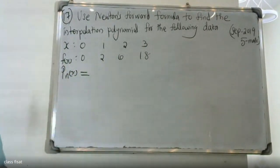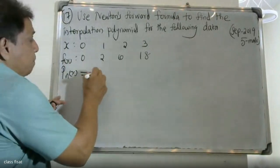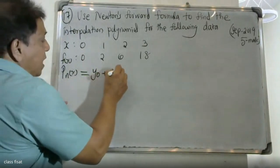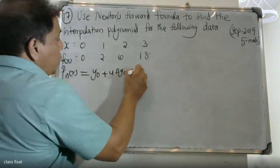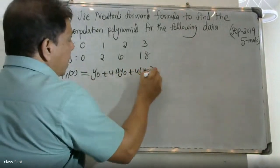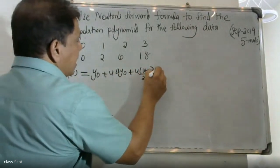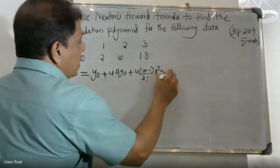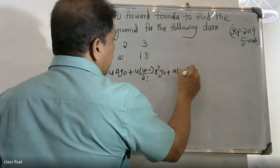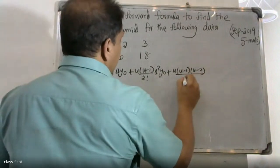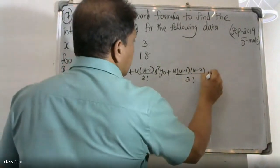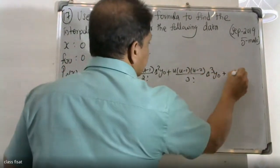PNX is equal to y0 plus u delta y0 plus u into u minus 1 by 2 factorial delta square y0 plus u into u minus 1 u minus 2 divided by 3 factorial delta cube y0 plus etc.